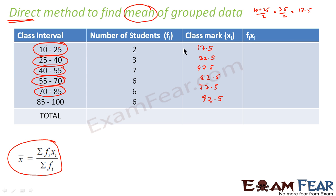Now I have to find fi xi, so I'll multiply these two values. 2 into 17.5 is how much? 35. 3 into 32.5 is how much? 97.5. 7 into 47.5 is how much? 332.5.